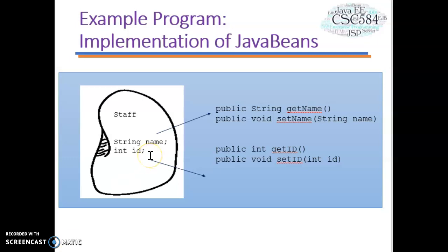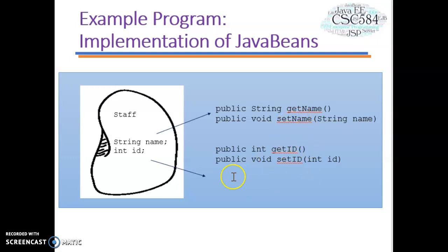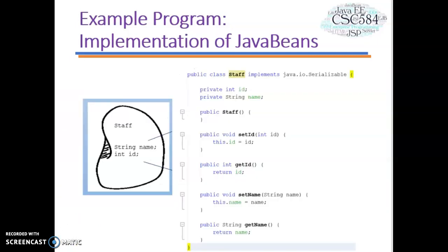Now let's look at an example program for a Java Bean. This is a Java Bean class named Star that has two data members: name and id. For the Java Bean properties, we need to create the accessor and mutator methods — getName, setName, getId, and setId. Let's now look at the program code for this Java Bean class.